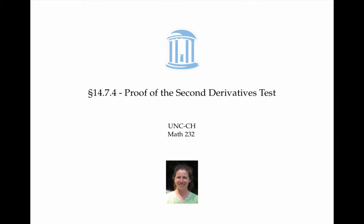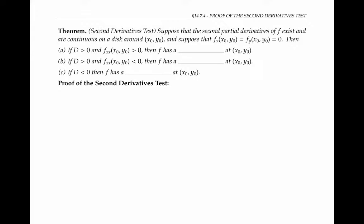This video gives a proof of the second derivatives test for distinguishing when critical points are local maximums, local minimums, or saddles. The test applies to functions whose second partial derivatives exist and are continuous in a region around the point of interest (x₀, y₀). That condition allows us to apply Clairaut's theorem to say that the mixed partials f_xy and f_yx are equal.